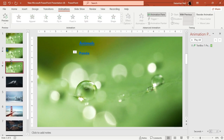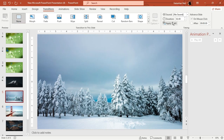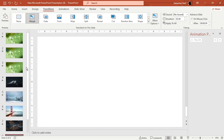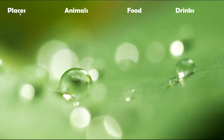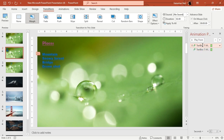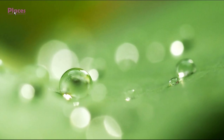Now apply Morph transitions to all slides so everything is smoother. You can add different transitions but Morph is preferred. Press F5 to start the slideshow and test the drop-down menus. Make sure Start With Previous is set correctly for animations, then go to the presentation.